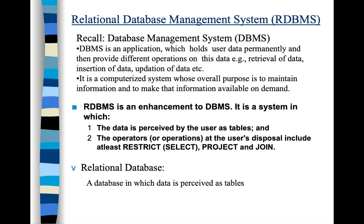The relational model has a closure property. Closure property means: you give input in a certain form, and the output comes in the same form. In the relational model, we input tables into operations. If we perform any operation — a join or any other — we give it tables as input, and it gives us the output in the form of tables as well. So two tables as input produce one table as output.